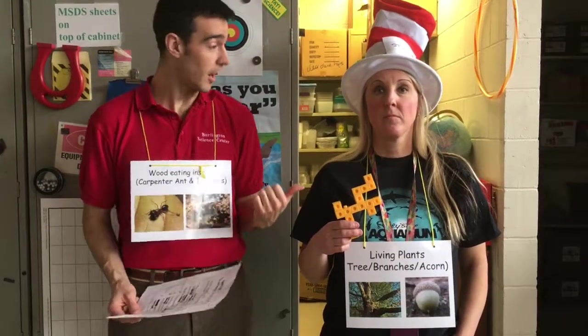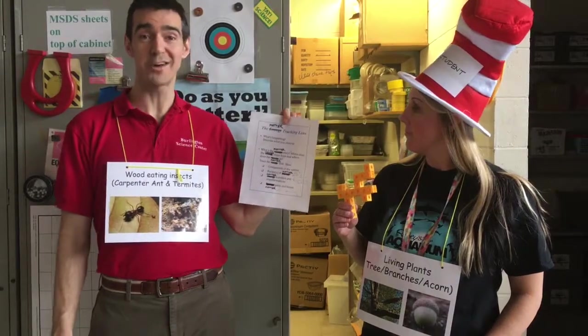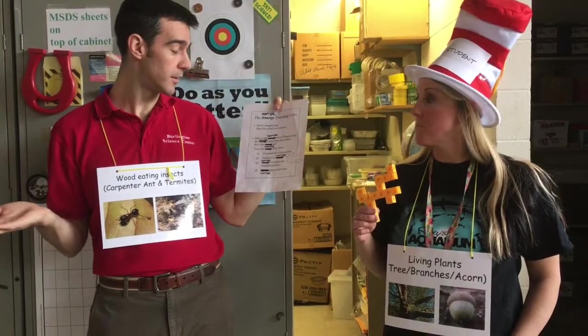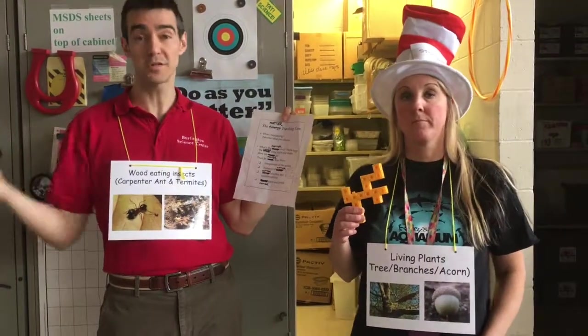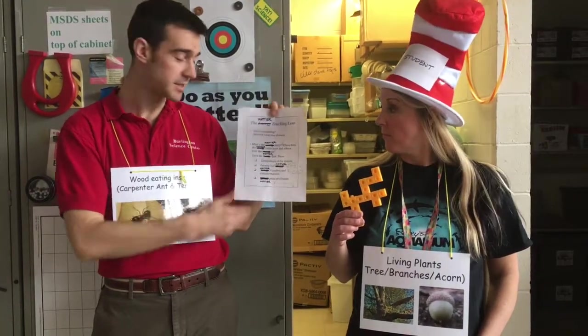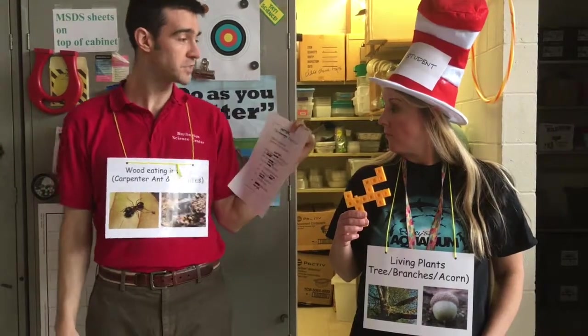Right now Ms. P and I are going to demonstrate a part of the system where matter is flowing from the plant, or the log, to one of the creatures. Remember that we're going to be using the matter tracking lens — the energy tracking lens is crossed out — so we're asking students about the matter story: where does it come from and ultimately where does it go? To do that we follow the four stages listed below.